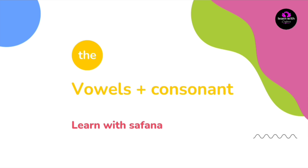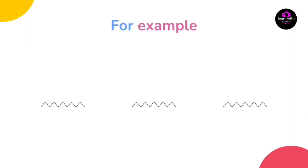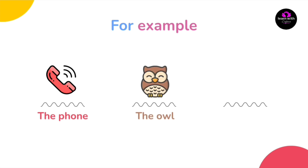اما الـ 'the' تيجي مع الـ vowels ومع الـ consonants. فمثلا نقول: the phone، the owl، the cow.